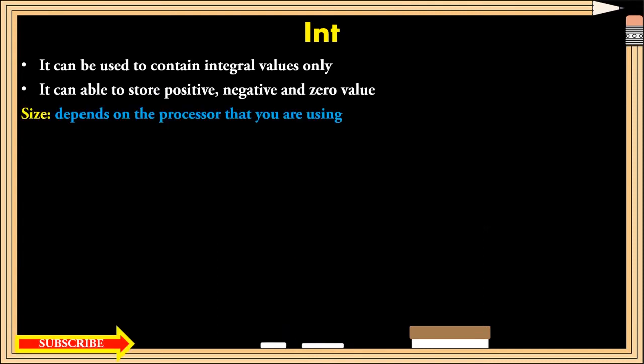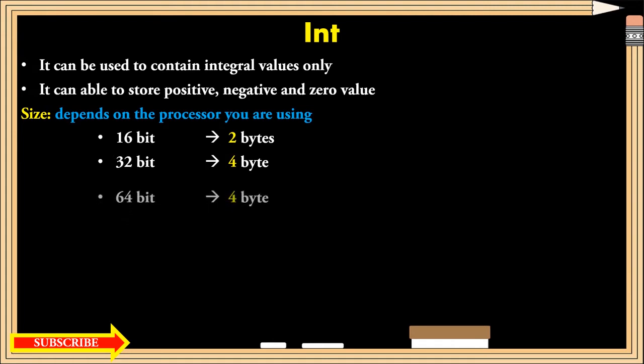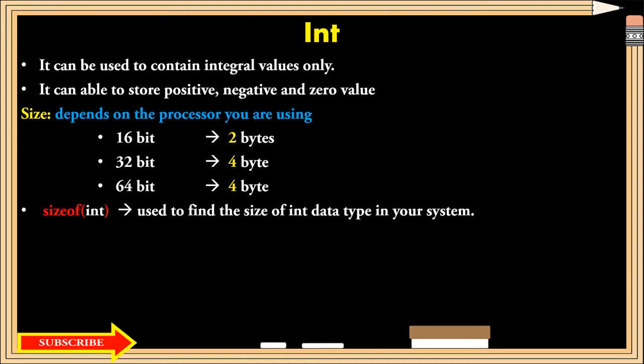Next, the size. It is an important phenomena that you have to know. Actually, the size of any data type depends upon the processor that you are using. For example, 16-bit processor can hold 2 bytes of data, 32-bit 4 bytes of data, and 64-bit 4 bytes of data in case of int data type.